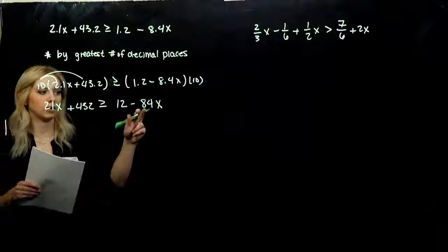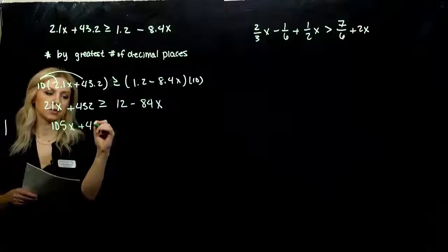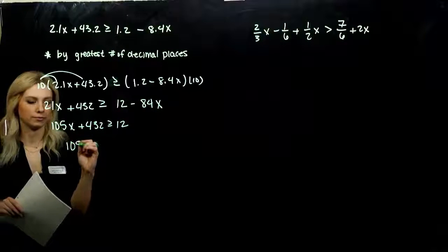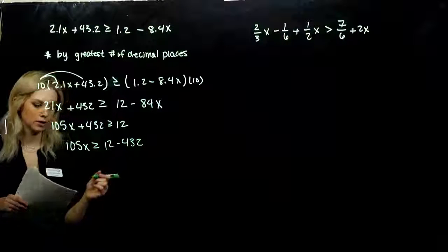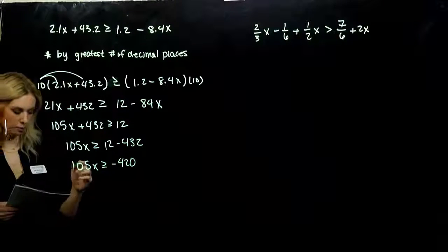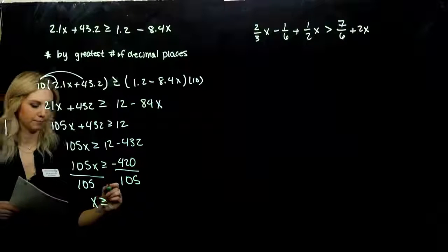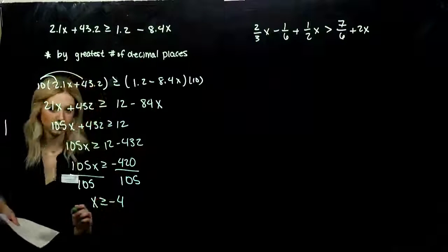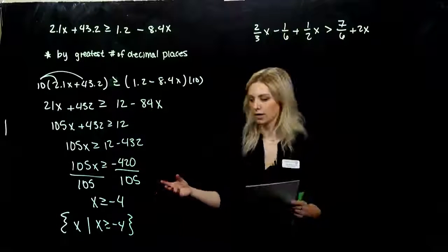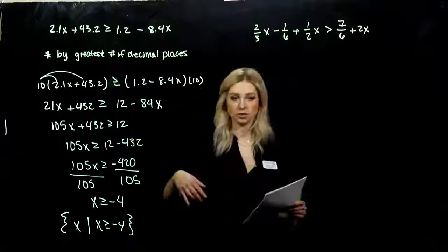Working towards keeping the coefficient positive, I want to move minus 84x to this side. When I do that, we're looking at 105x plus 432 is greater than or equal to 12. Now I want to move 432 to the other side, so when we subtract, 12 minus 432 gives us minus 420. So 105x is greater than or equal to minus 420. I divide both sides by 105 to get x on its own — so x is greater than or equal to minus 4. In set builder notation: the set containing x such that x is greater than or equal to minus 4.